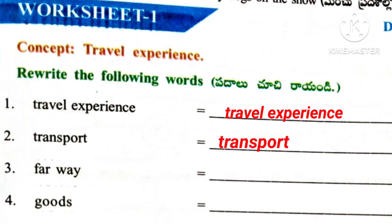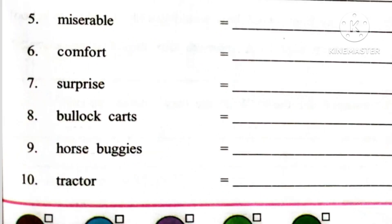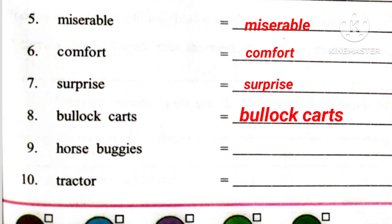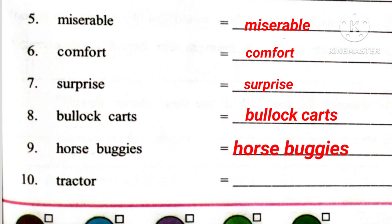2nd one: Transport. 3rd one: Farway. 4th one: Goods. 5th one: Miserable. 6th one: Comfort. 7th one: Surprise. 8th one: Bullock Cards. 9th one: Horse Boogies. 10th one: Tractor.